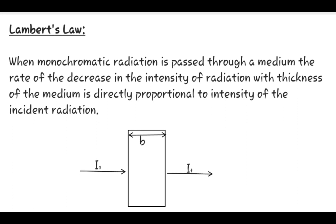Lambert Beer's Law consists of two laws. First is Lambert's Law and the second is Beer's Law. Lambert's Law is concerned with the thickness of the medium, whereas Beer's Law is concerned with the concentration of the solution through which monochromatic radiation passes.